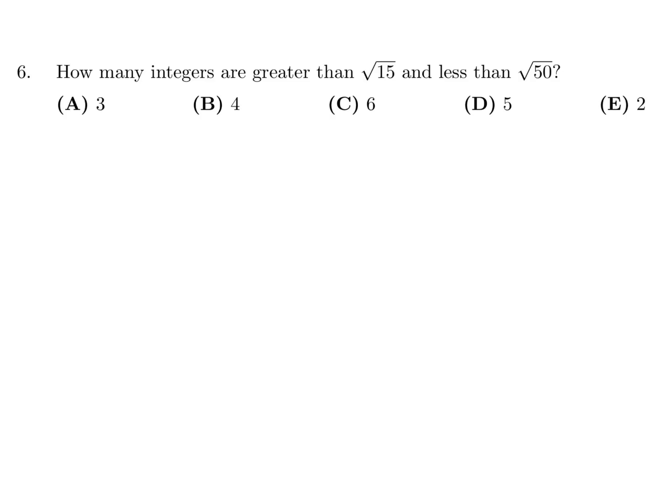How many integers are greater than root 15 and less than root 50? So let's say an integer is N. It's greater than root 15 and less than root 50. So root 15, it's best to convert it to decimals. It's about 3.8. And root 50 is just over 7, so 7.1, let's say.